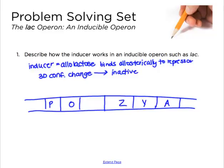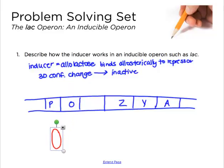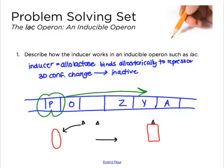So with this inactive protein - if this is the normal repressor protein, it can go right over and block the operator. But if allolactose comes in, drawn as little black triangles, it binds to the repressor and now the repressor changes conformation and looks like a rectangle. Now it doesn't fit correctly on the DNA of the operator and so it can't bind, leaving the operator free.